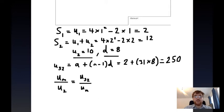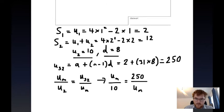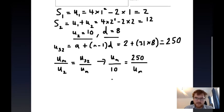From what we just did, we worked out u32, which was 250, and u2, which is equal to 10, so we can plug that in. We get um divided by 10 is equal to u32, which is 250, divided by um. We're going to cross multiply at this point, so we get um squared. We can cross multiply like so, and that's equal to 250 times 10, which is 2500.